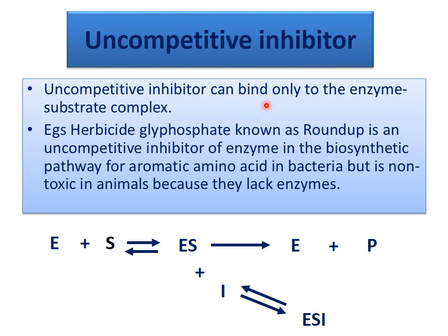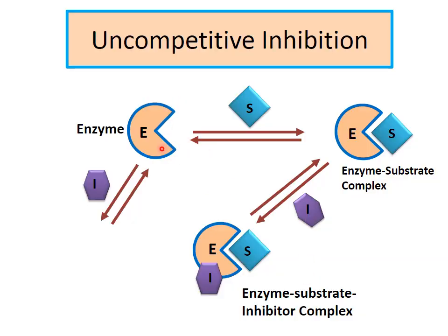The last type is uncompetitive inhibition. In uncompetitive inhibition, the inhibitor can bind only to the enzyme-substrate complex — it does not bind to the free enzyme. An example is the herbicide glyphosate, known as Roundup, which is an uncompetitive inhibitor of an enzyme in the biosynthetic pathway of aromatic amino acids in bacteria. It is non-toxic to animals because they lack this enzyme. The inhibitor binds after the ES complex is formed, creating an enzyme-substrate-inhibitor complex.